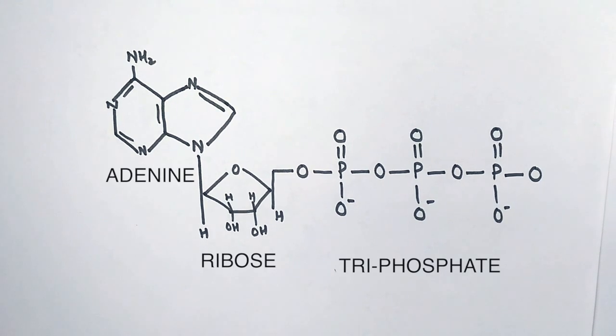These three elements are linked together: adenine is linked with ribose, and ribose links with three phosphates. But the three phosphates are linked to each other in a linear fashion. This makes the ATP molecule.